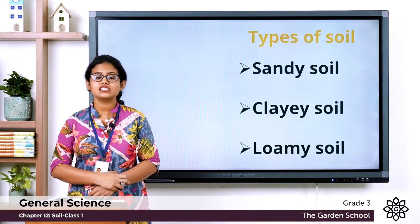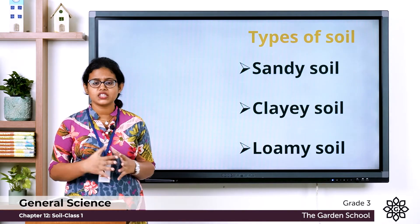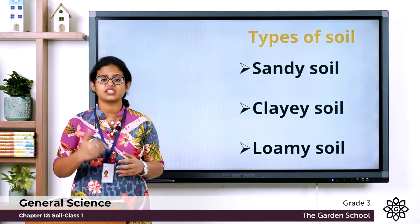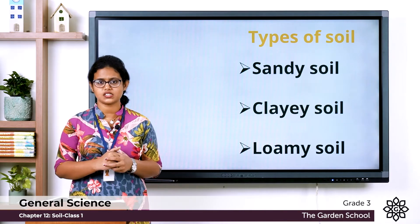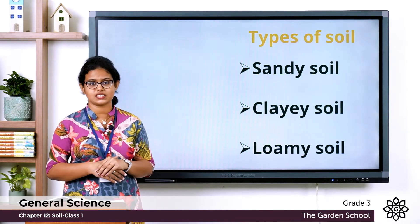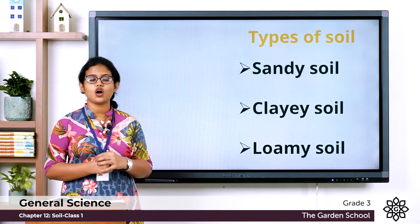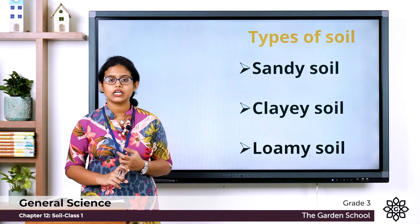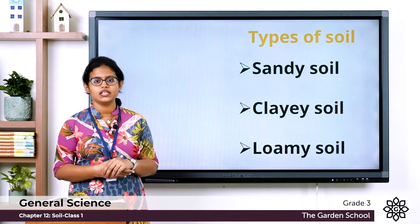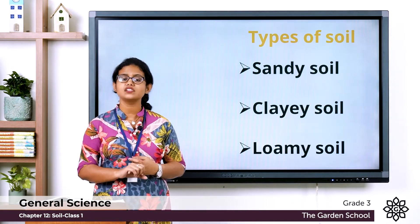Now let's discuss the different types of soil. There are different types such as black soil, red soil, alluvial soil, and laterite soil. Today we are going to learn about three types of soil based on their characteristics: sandy soil, clay soil, and loamy soil.